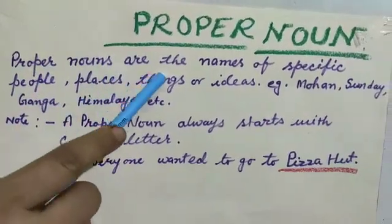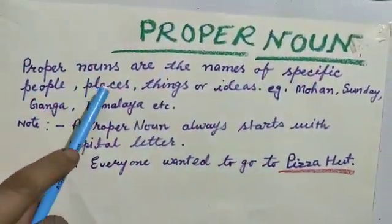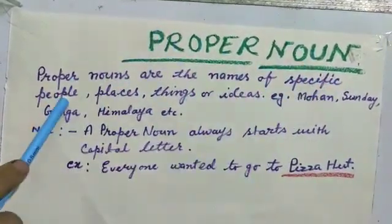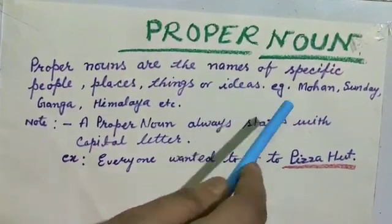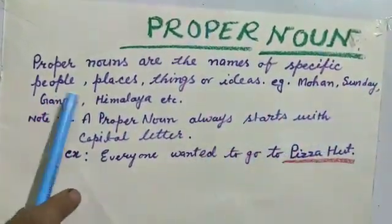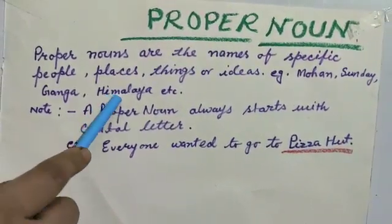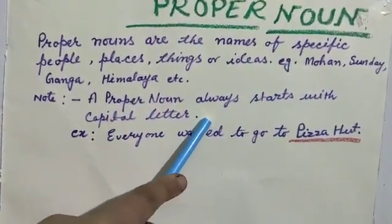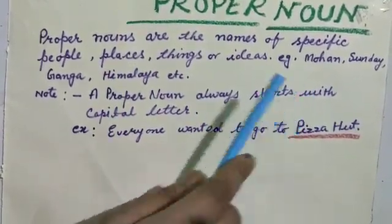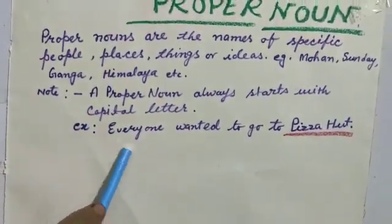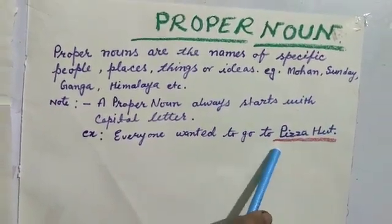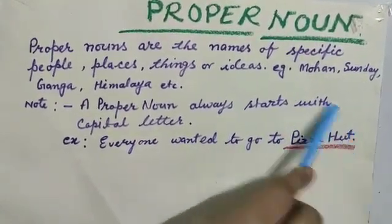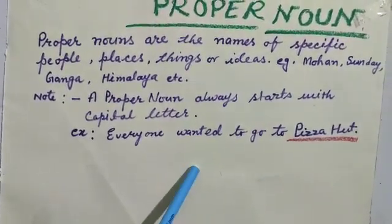Now let us move to proper noun, the second type of noun. Proper nouns are the names of specific people, specific places, things, or ideas. The key note: a proper noun always starts with a capital letter — never forget it, be careful about this. For example, 'Everyone wanted to go to Pizza Hut' — P in Pizza and H in Hut are written in capital letters, as it is the name of a specific pizza shop.